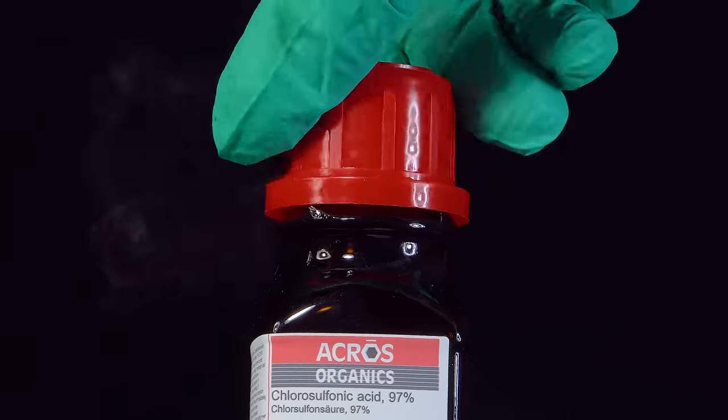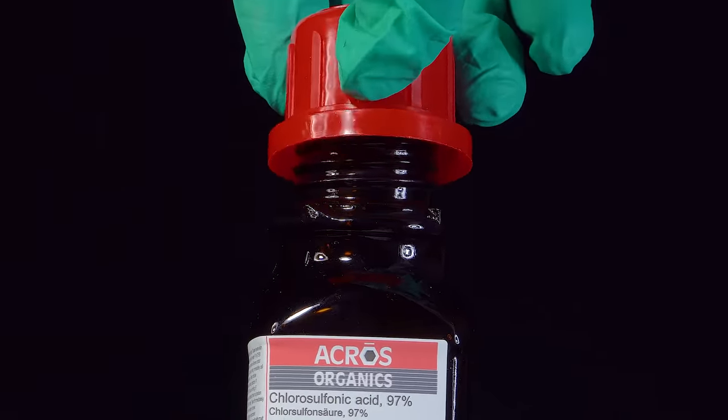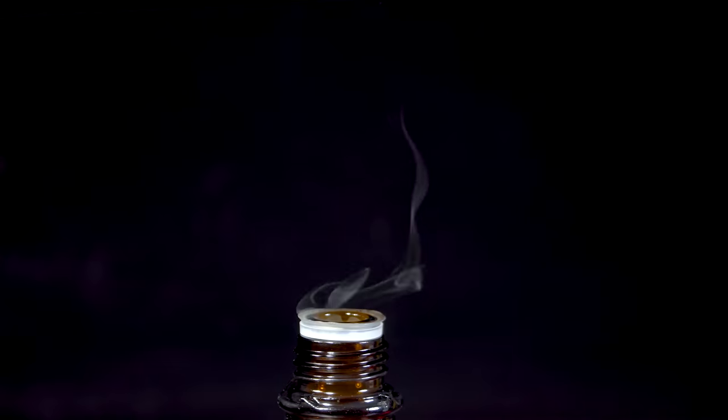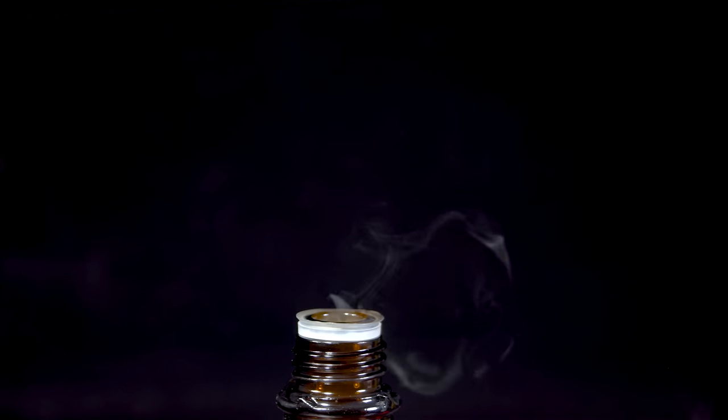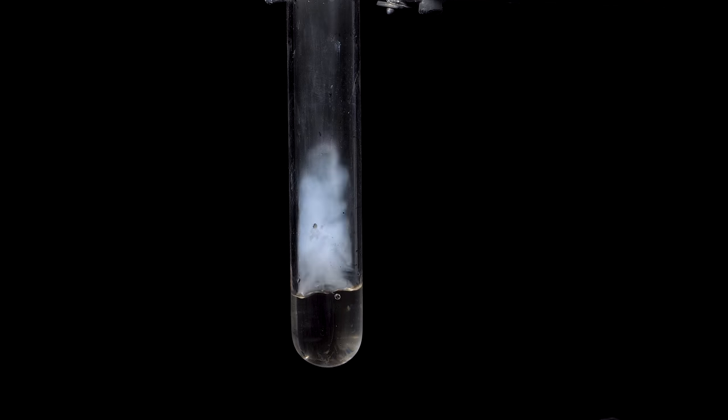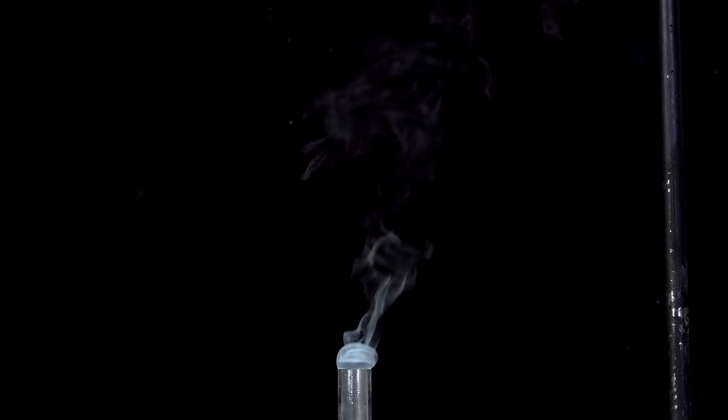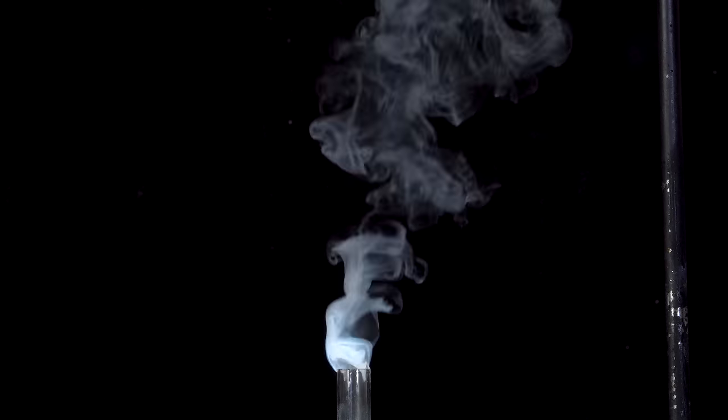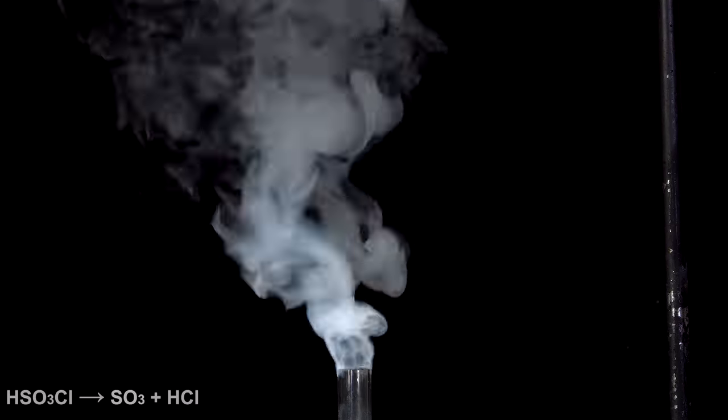In air, this acid fumes, forming the mist of sulfuric acid and hydrogen chloride. If you heat this acid to the temperature above its boiling point, it will form a much more poisonous compound called sulfur trioxide. Just a tiny bit of chlorosulfonic acid is able to create a great amount of poisonous fume.